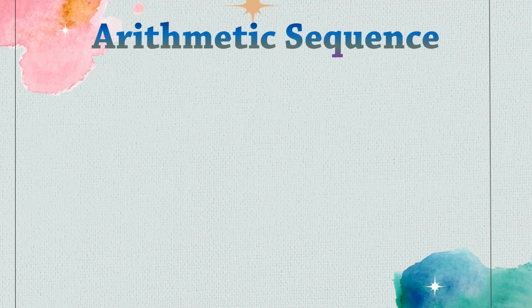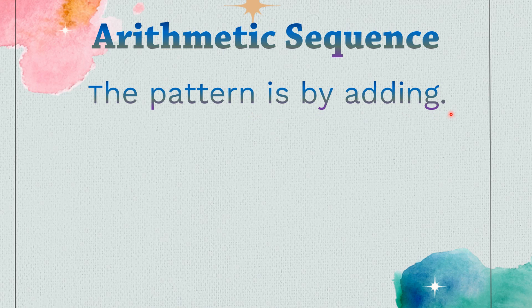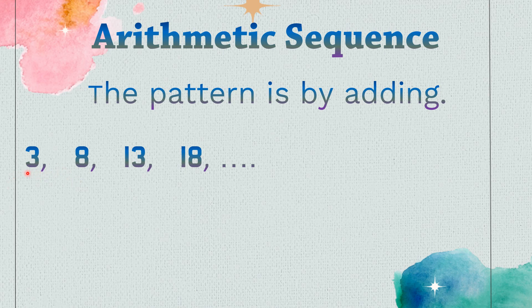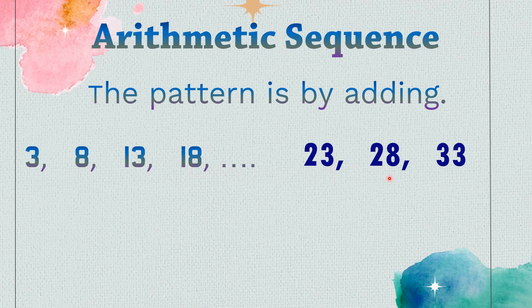Let us look at the arithmetic sequence. In an arithmetic sequence, the pattern is by adding. In this example — 3, 8, 13, and 18 — the pattern to be added is 5. So: 3 plus 5 is 8, plus 5 is 13, plus 5 is 18. The next three terms are: 18 plus 5 is 23, plus 5 is 28, plus 5 is 33. This example is an arithmetic sequence.